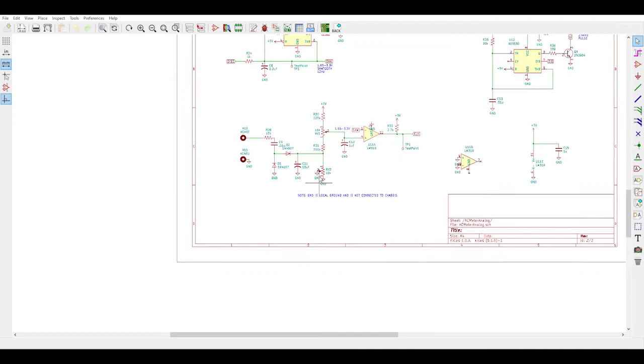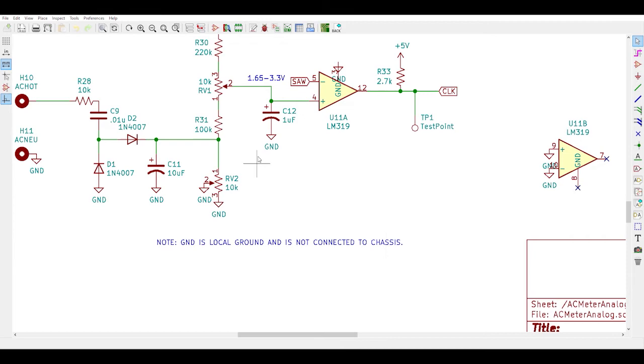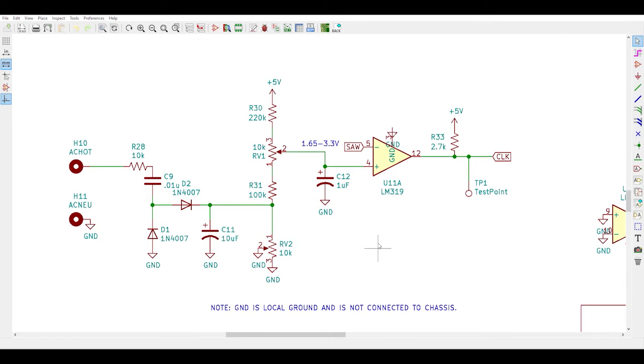The first comment I would make on the circuit is to notice that the ground on the schematic is local ground for the AC meter circuit and it's not connected to the dim bulb chassis nor the mains neutral. It's only connected to one side of the isolation transformer. This is important because making any connection from the local AC meter ground to the chassis ground would defeat the isolation transformer.